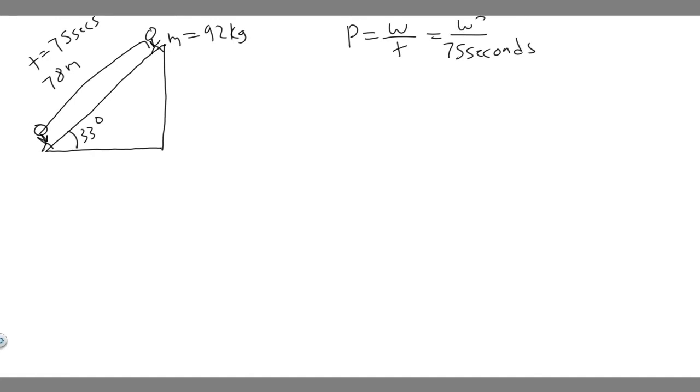And so what we need to do is solve for the work. Because if we can get the work, then we can just divide by 75 and then we can get the power. So how do we calculate the work? The formula for work is force times distance times the cosine of theta. But in this case, as long as your force is in the same direction as the way you're going, then you don't need the cosine of theta. So we just need to find the force in this direction.